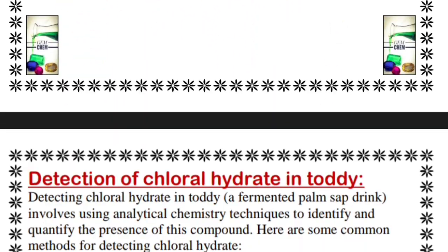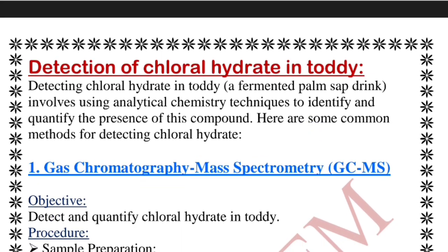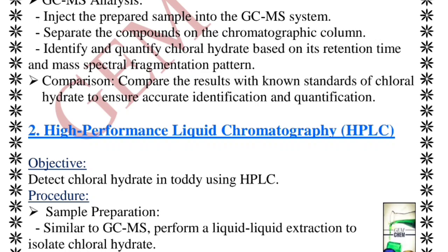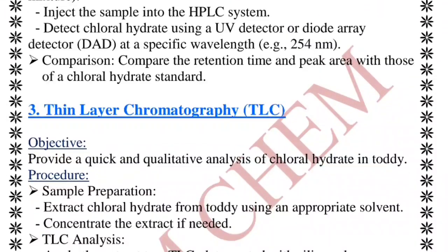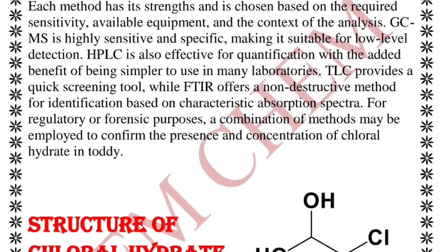Now we shift to detecting the amount of chloral hydrate in toddy. Toddy is a palm sap drink which is fermented. The methods used are gas chromatography, HPLC, thin layer chromatography, and FTIR. Each method has its own strengths and weaknesses. The most effective is HPLC, while FTIR offers a non-destructive method — when undergoing HPLC your sample gets destroyed, but FTIR prevents destruction of the sample. This slide also shows the structure of chloral hydrate.